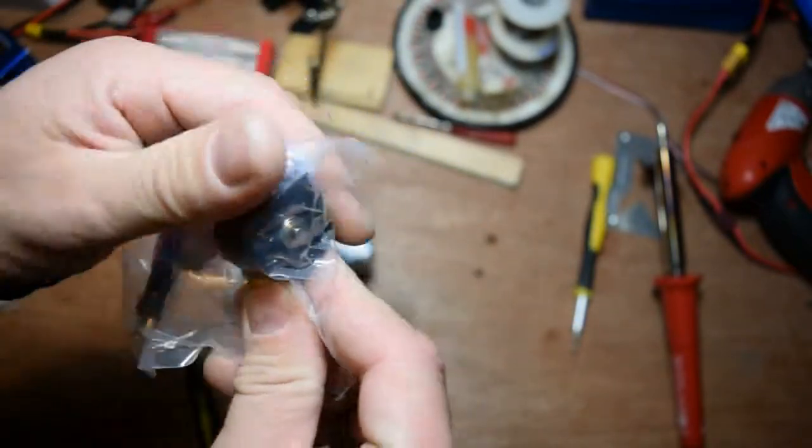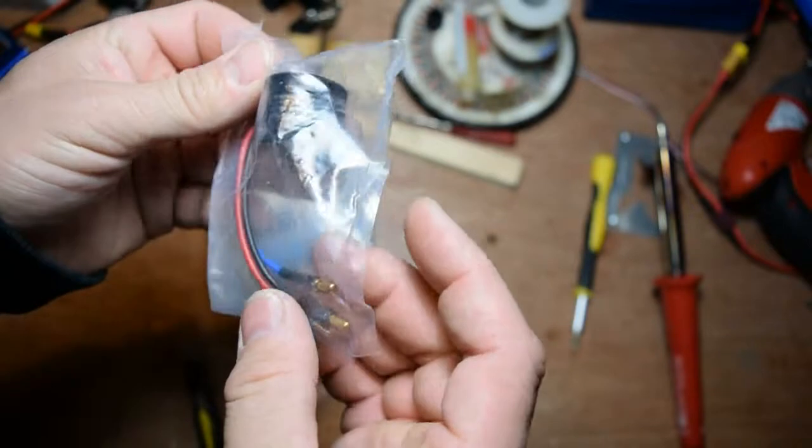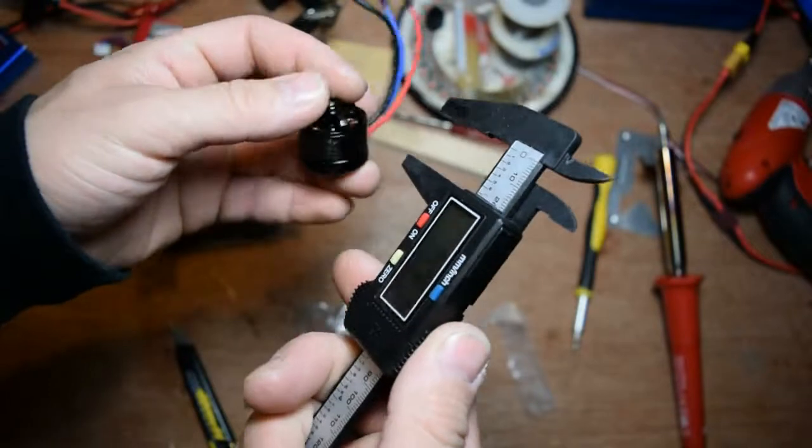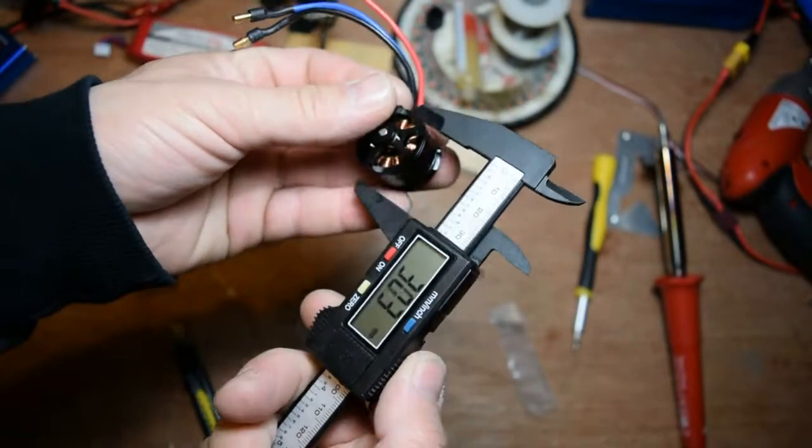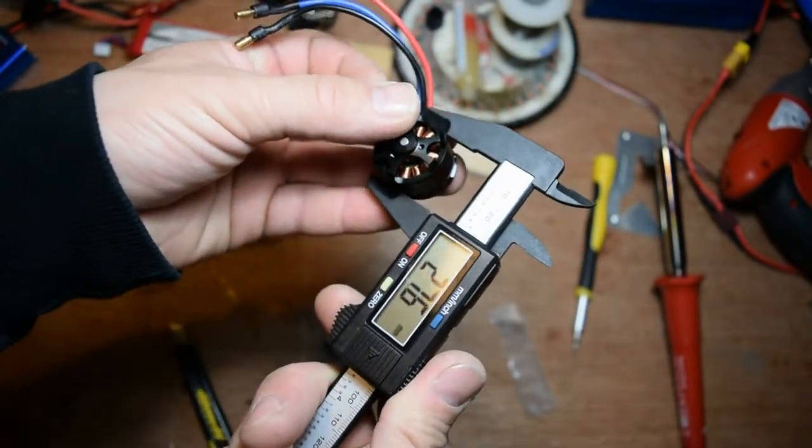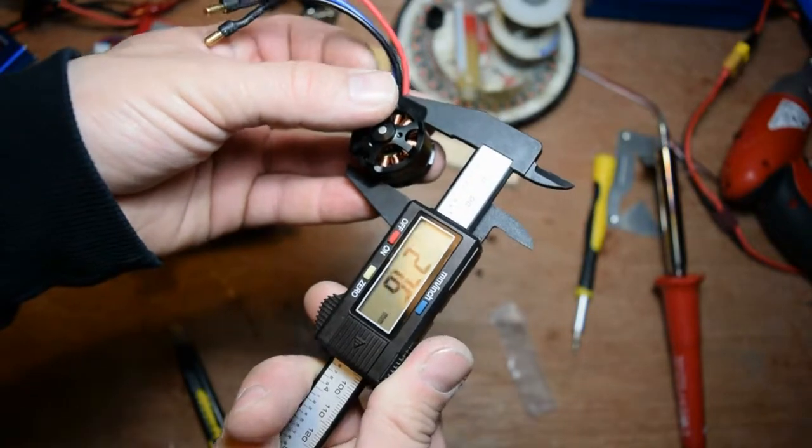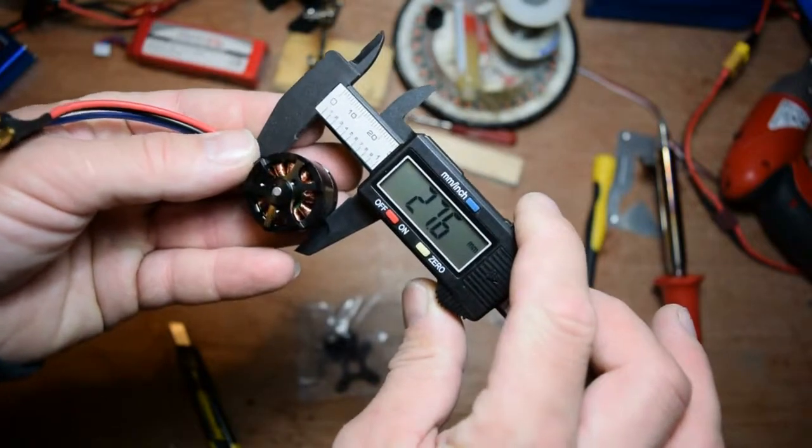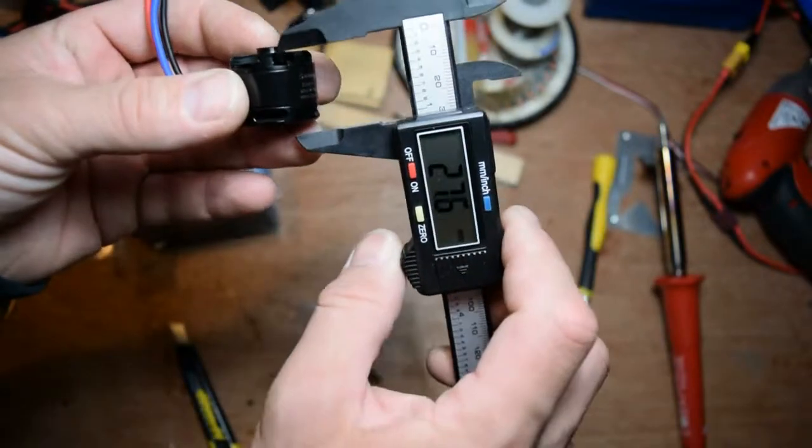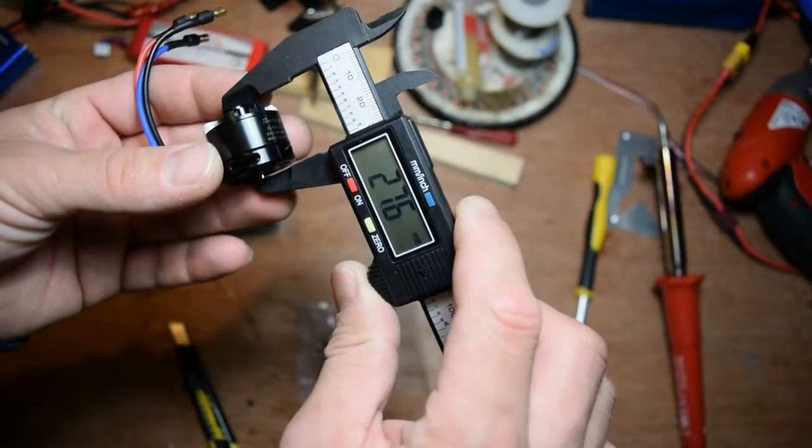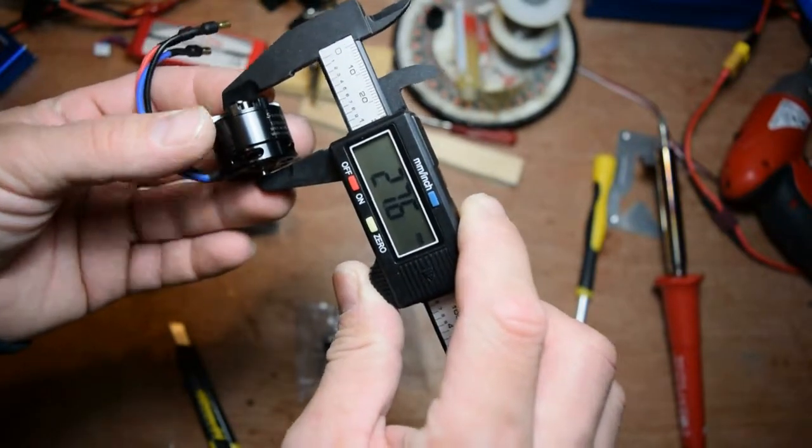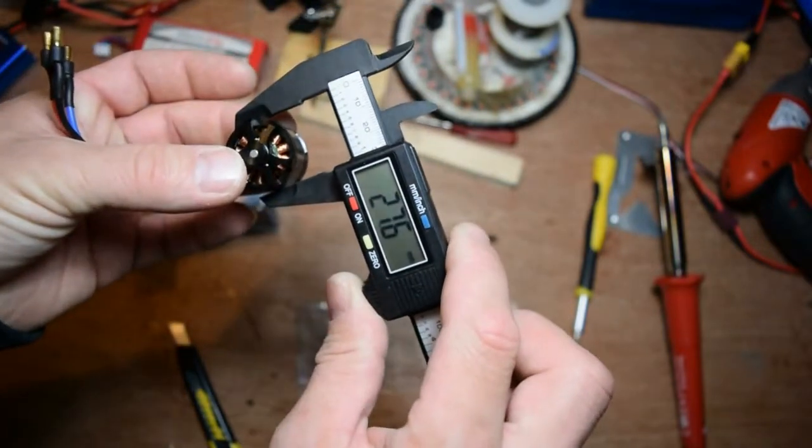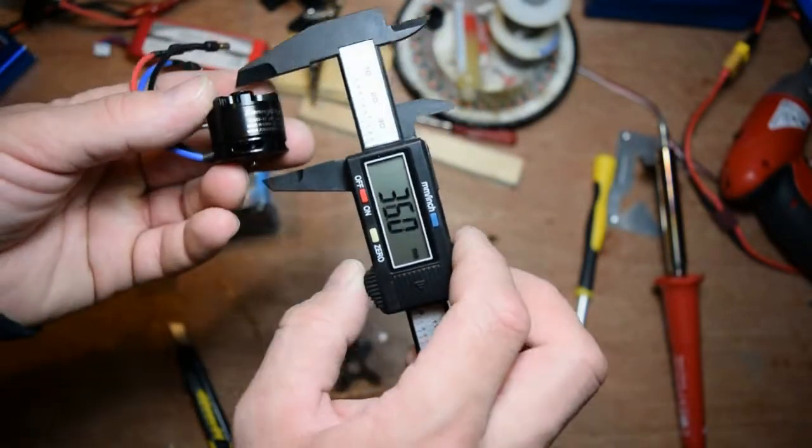As you can see, the bag is sealed - nobody opened it until now. So let's open up. My caliper... twenty-seven point six. Twenty-seven point six, so everything is the same. Up and down is the same.